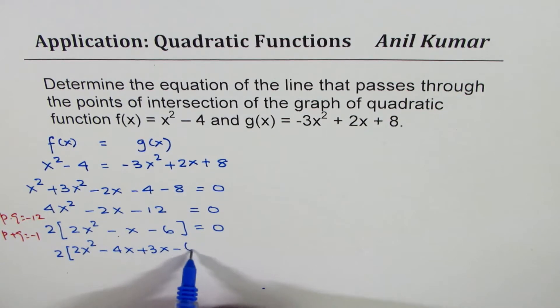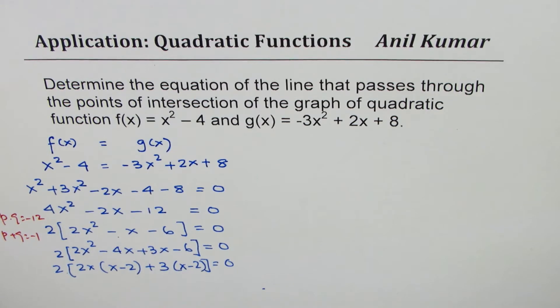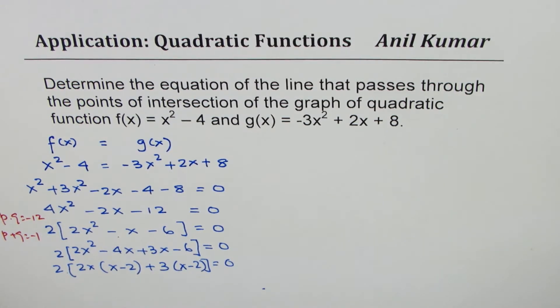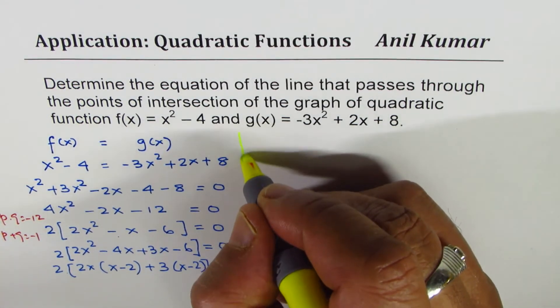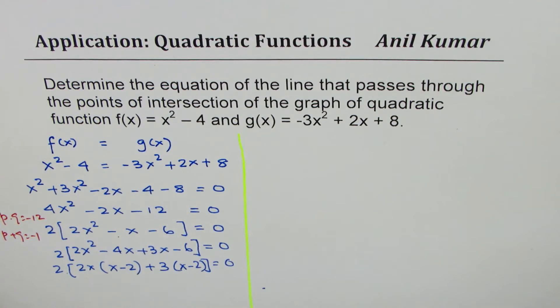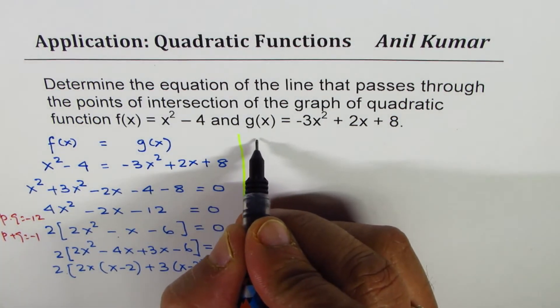We could write this as 2(2x² - 4x + 3x - 6) = 0. Now we can factor 2x from here so we get (x - 2), and factor 3 getting (x - 2) = 0.